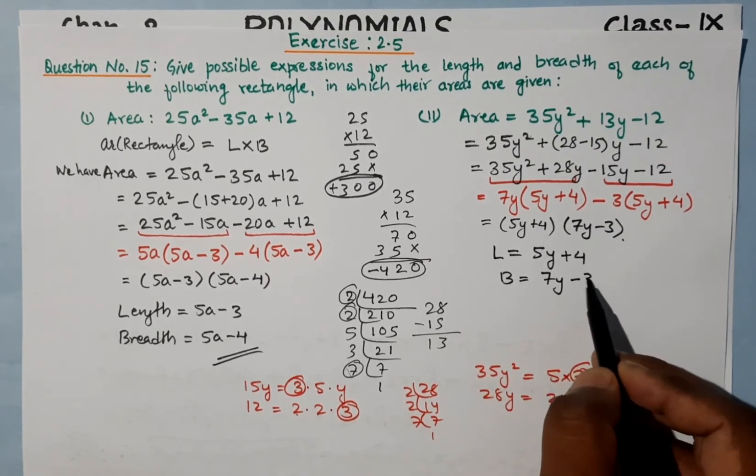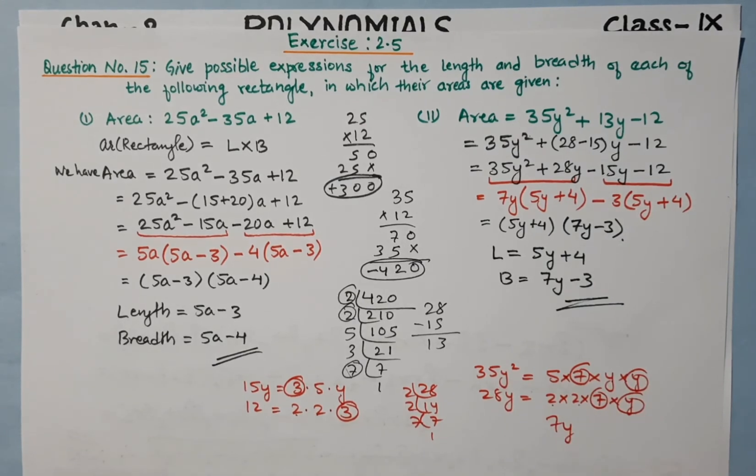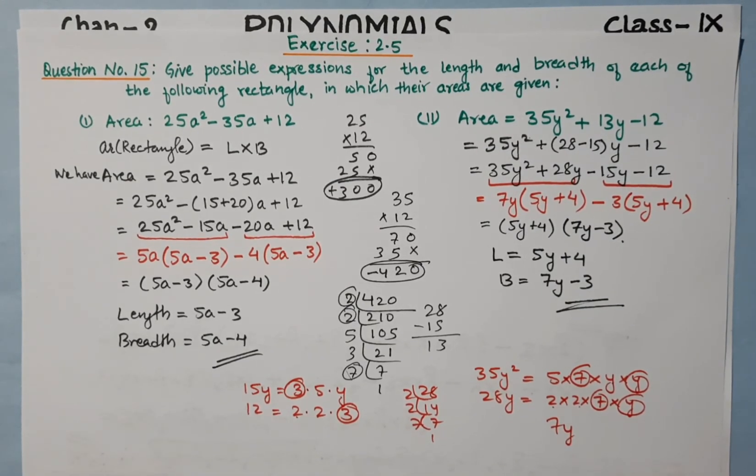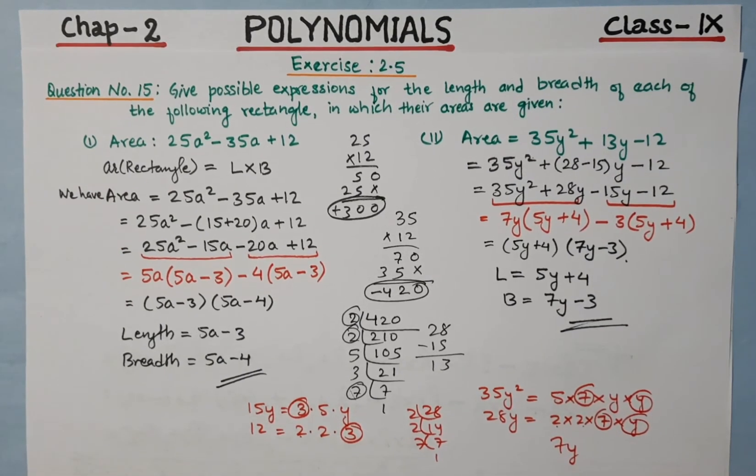This is length and breadth. Therefore, our length is 5y + 4 and our breadth is 7y - 3. This is our answer. We have solved question number 15 of exercise 2.5. The remaining questions we will do in our next class. Till then, keep practicing and thank you very much.